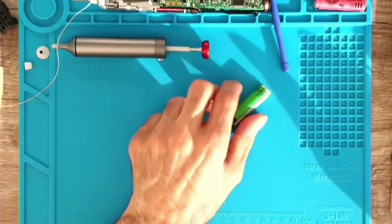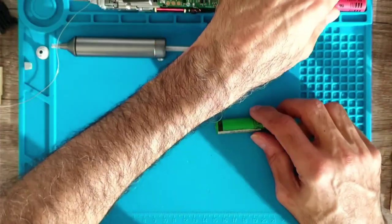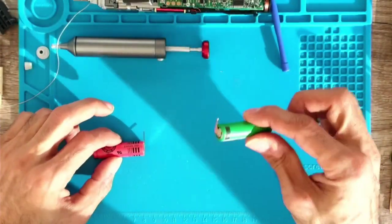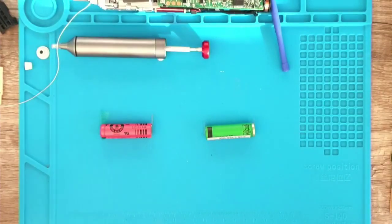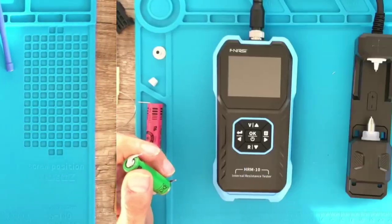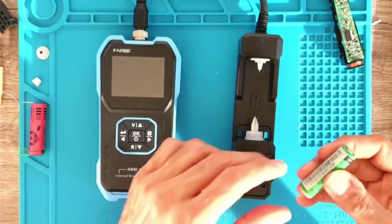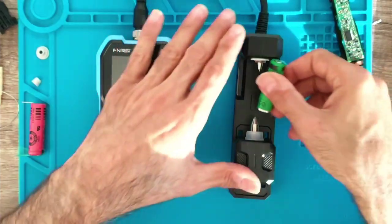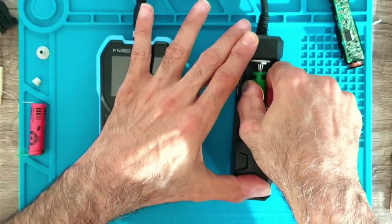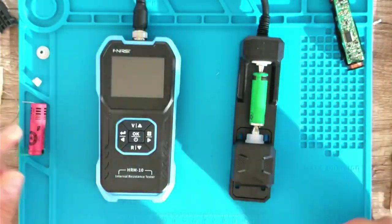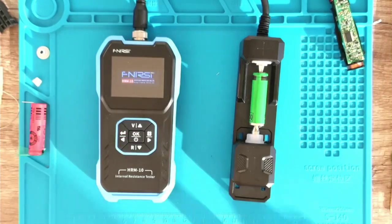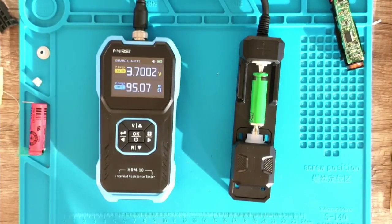Let's test the battery resistance, internal battery resistance of the old versus the new. We are going to start with the old battery. 3.7 volts, 95 milliohms.